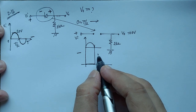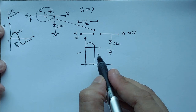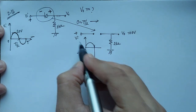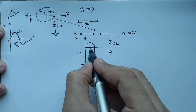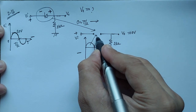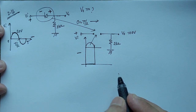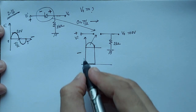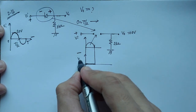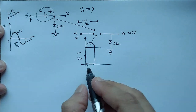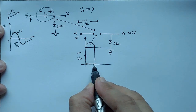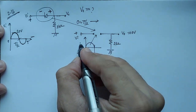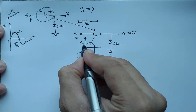This is because all the input voltage will appear across the diode, so the output voltage — this is V out — will be 0.